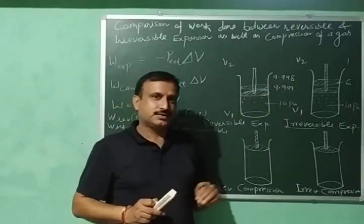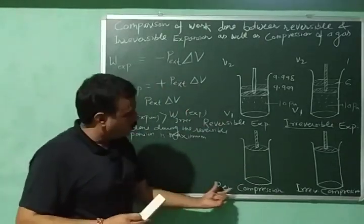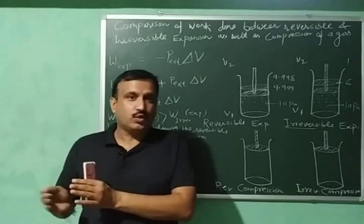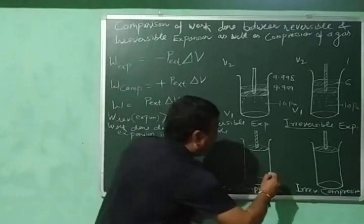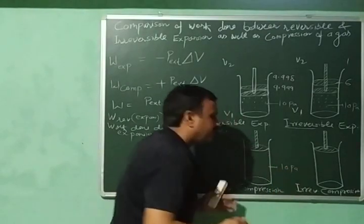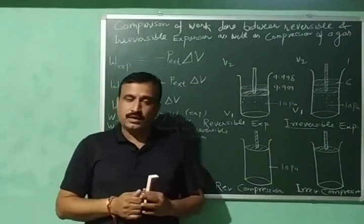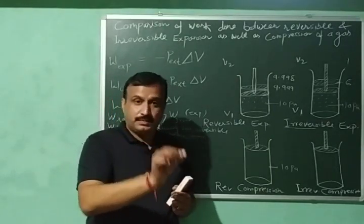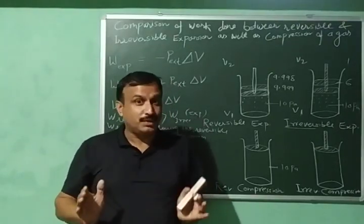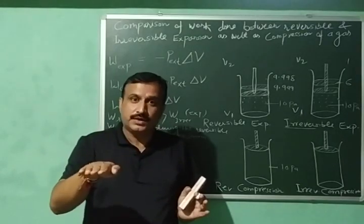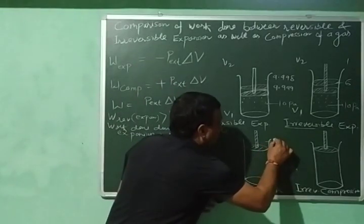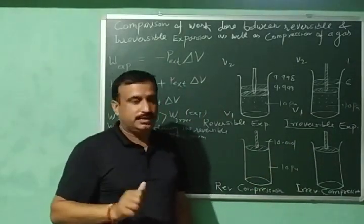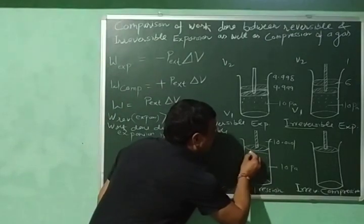Now let us discuss reversible compression. Reversible compression is also carried out very slowly. Suppose the internal pressure is 10 pascal and external pressure is also 10 pascal — system is at equilibrium. To compress the system, I increase the external pressure by a small amount — for example to 10.001. The piston moves downward slightly to a new position.